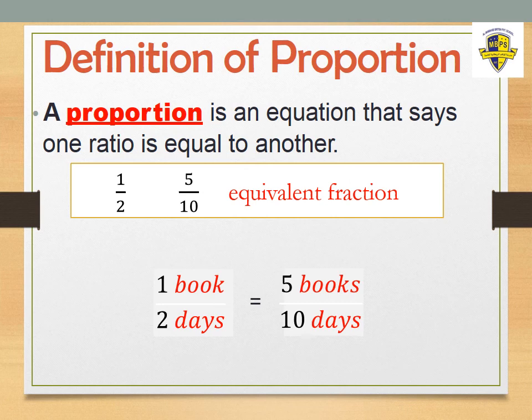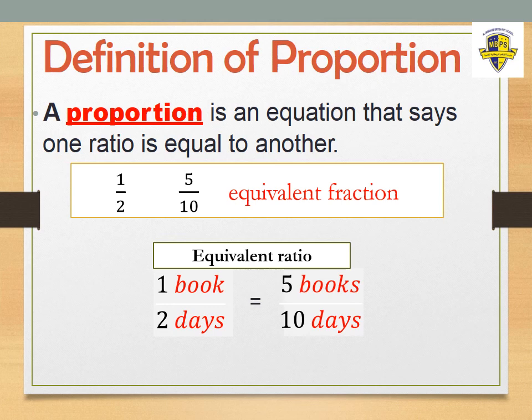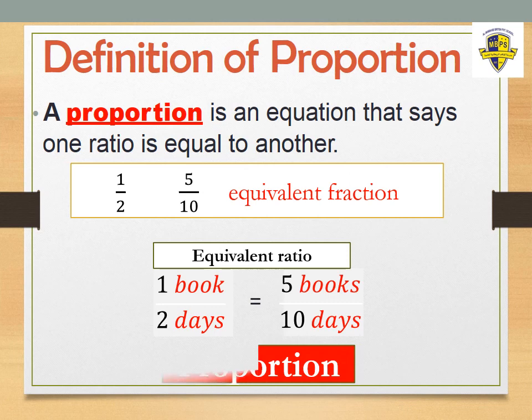Now you understand what proportion means: two ratios that are equivalent or equal. A proportion is just two equivalent ratios. One important thing: for two ratios to be equivalent, they not only have to have the same value, they also have to have the same units. Here, one book and five books; two days and ten days — the units must match.